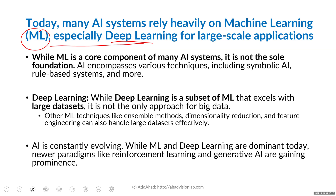In the past and still today there are cases where we use symbolic AI and rule-based systems. We mentioned rule-based systems in previous lectures — like search engines or traditional language translators — but modern translators are now incorporating deep learning and generative AI concepts, along with transformers.